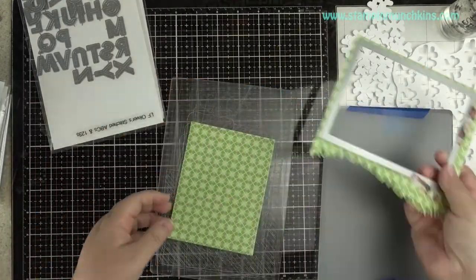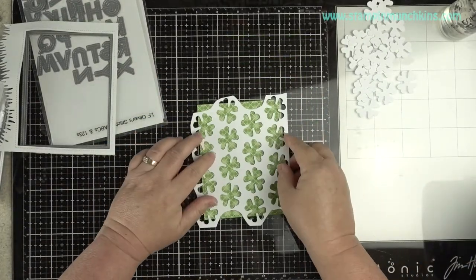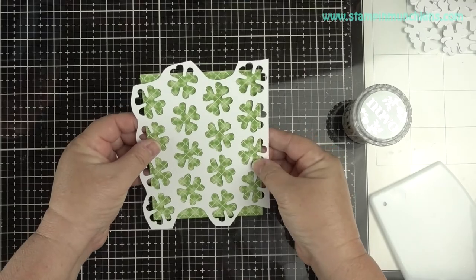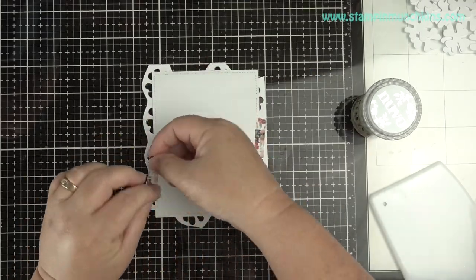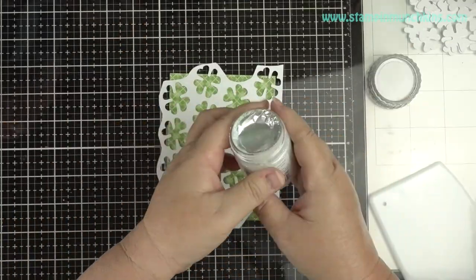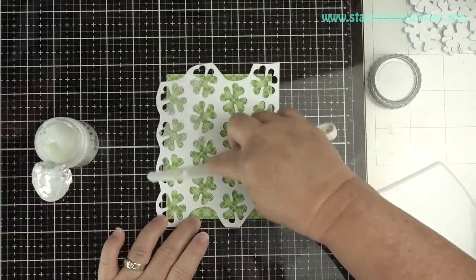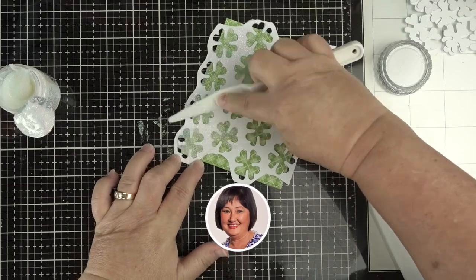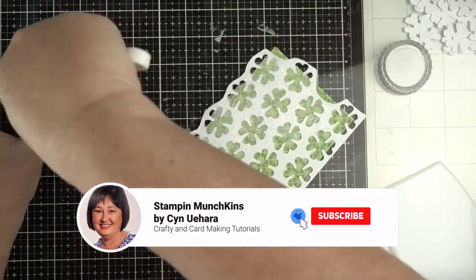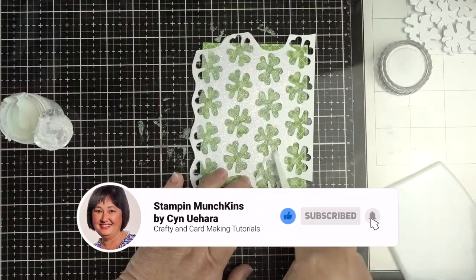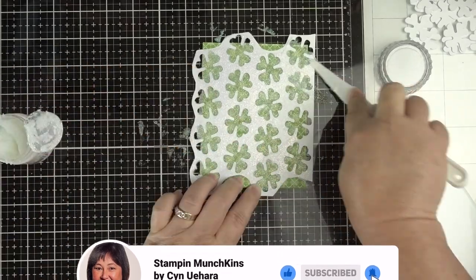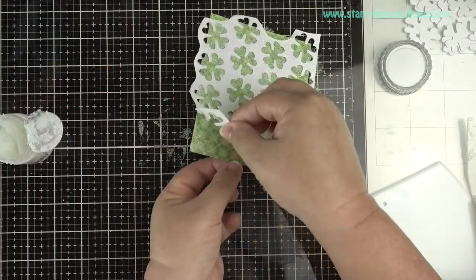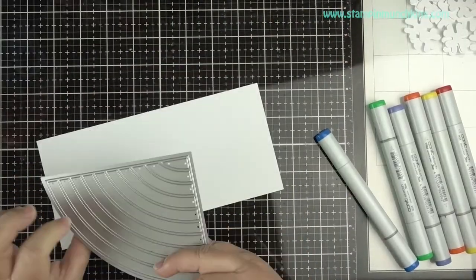So now I'm using the Outside In Stitch Rectangle from Lawn Fawn for the front of the card, and I'm using the stencil that I made with the Moonstone glitter through the stencil on my plastic palette, and I'm just going to put it on the side to dry.